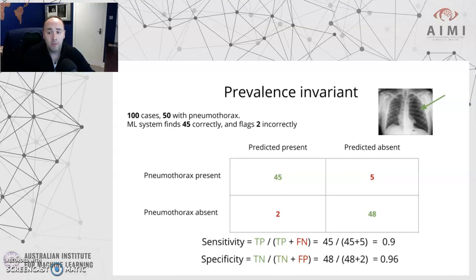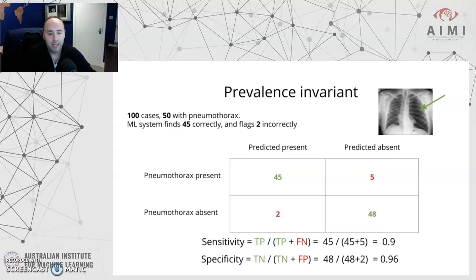So it will find 45 correctly and flag 2 incorrectly as false positives — previously it flagged 3 out of 90, now it's flagging 2 out of 50. Putting those numbers into the confusion matrix and doing the same calculations, you hit exactly the same sensitivity and specificity. These are prevalence-invariant metrics. Of course, this doesn't hold if you have 100% pneumothoraxes or 0% pneumothoraxes, but it holds largely for wide variations of disease prevalence within a set.